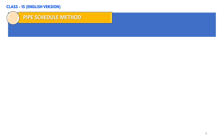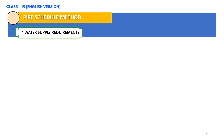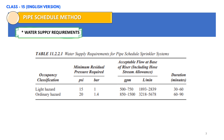In this slide, we shall go through water supply requirements for pipe schedule sprinkler systems. Table 11.2.2.1 shall be used in determining the minimum water supply requirements for light and ordinary hazard occupancies protected by systems with pipe sized according to the pipe schedules of section 23.5, which shall be discussed in later slides. Pressure and flow requirements for extra hazard occupancies shall be based on hydraulic calculation methods only.